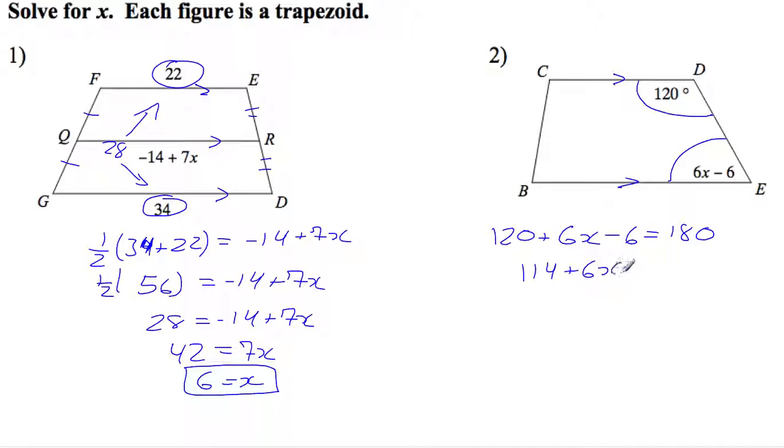So 120 minus 6 is 114. If I add that to 6x, I'm going to get 180. So if I have that 180 and I subtract 114, I'm going to get that 6x is equal to 66, or x is equal to 11. That's it.